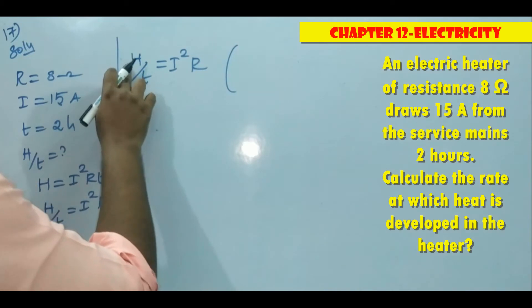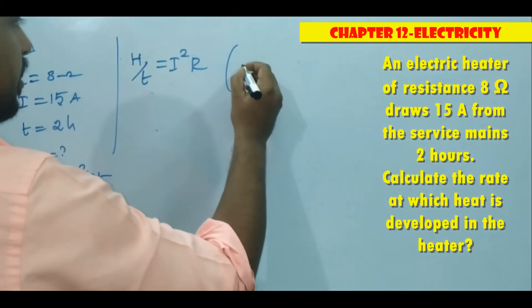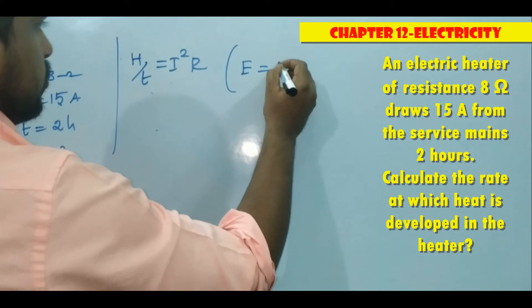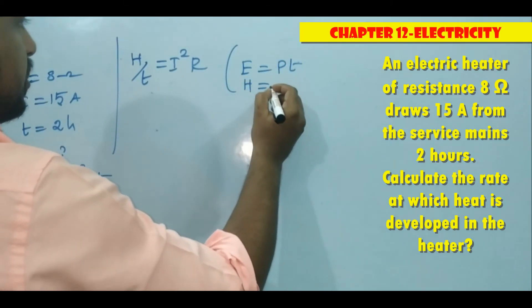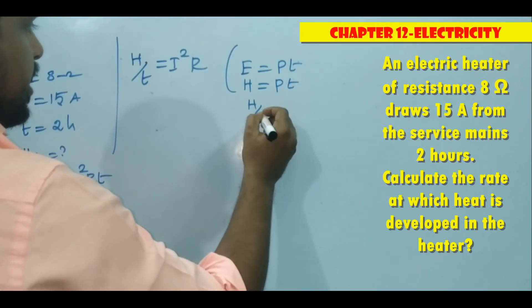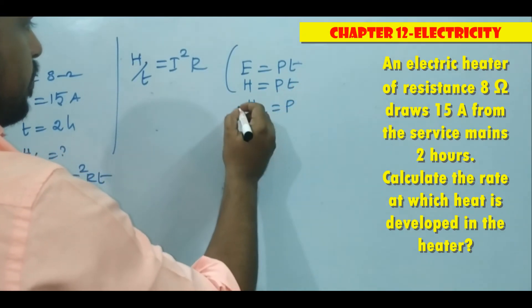So here what is h? h is nothing but energy. So we have formula energy is equal to power into time. Here energy become heat. So heat energy. So h is equal to power into time. Then h by t is equal to power.